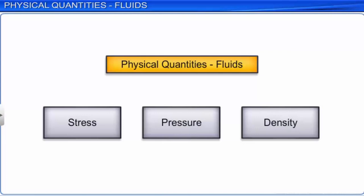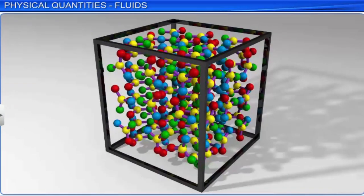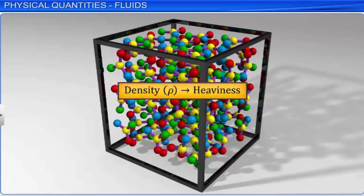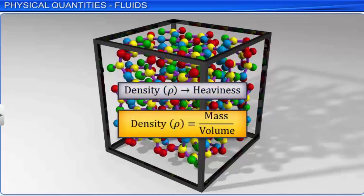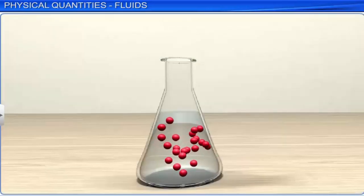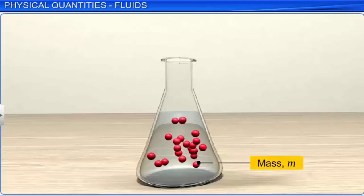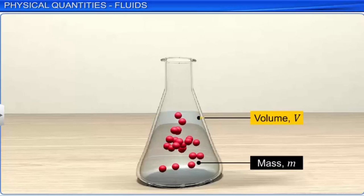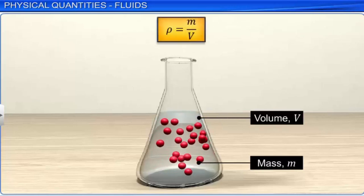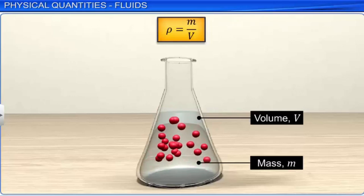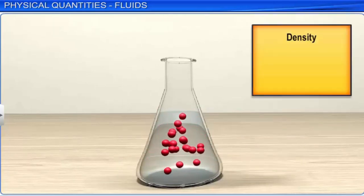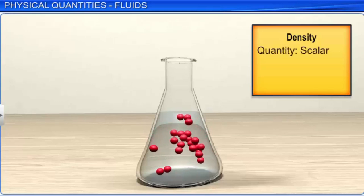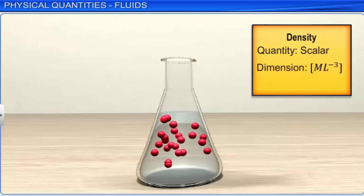Another important physical quantity related to fluids is density, represented by the Greek letter rho. Density of a substance gives a fair idea of its heaviness. It is defined as mass per unit volume. The density of a fluid of mass M occupying volume V is represented as M/V. As mass and volume are both scalars, density is scalar and its dimensions are ML⁻³. In the SI system, density is measured in kilograms per cubic meter.